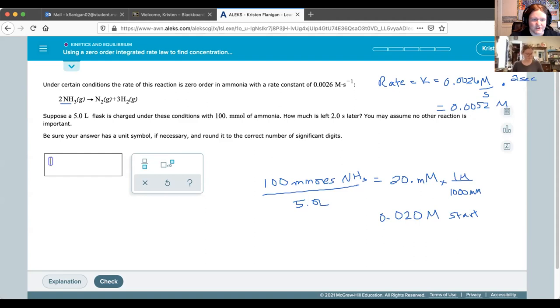So if the problem asked how much nitrogen is produced, you could do the stoichiometry after that. You know how much of the ammonia was used up, so you could then use your molar ratio to ammonia to nitrogen, and then you'd be able to figure out how much nitrogen is made. You could do the same thing with hydrogen as well. So that's another type of problem we might have here. This one is asking us essentially how much is left.